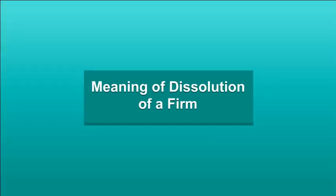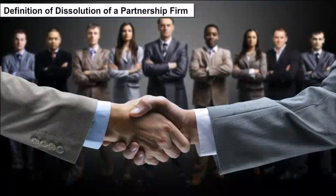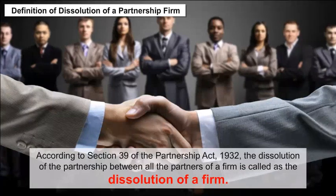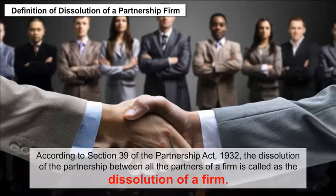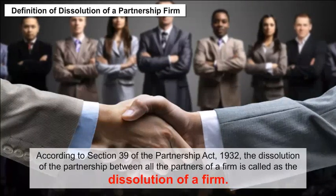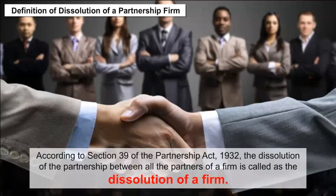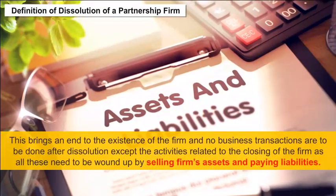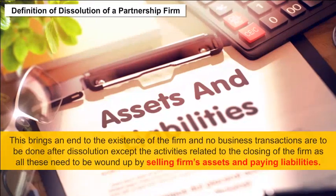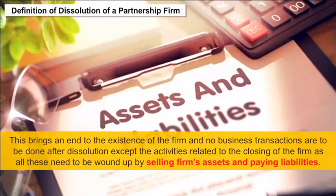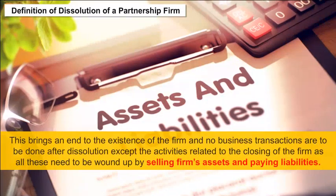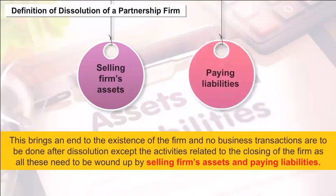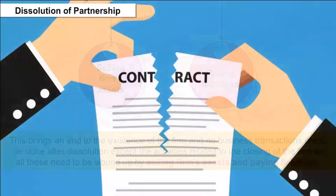Meaning of Dissolution of a Firm. According to Section 39 of the Partnership Act, 1932, the dissolution of the partnership between all the partners of a firm is called the dissolution of a firm. This brings an end to the existence of the firm and no business transactions are to be done after dissolution, except activities related to closing of the firm — winding up by selling the firm's assets and paying liabilities.